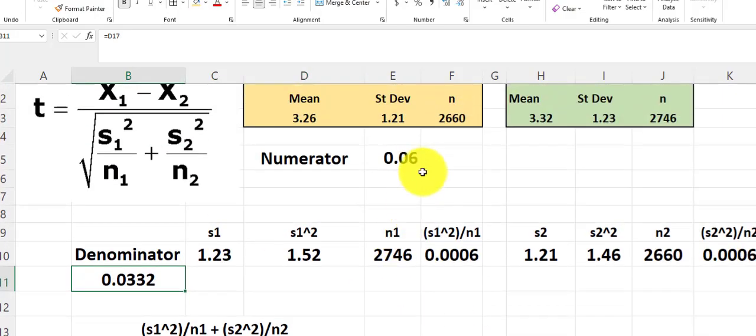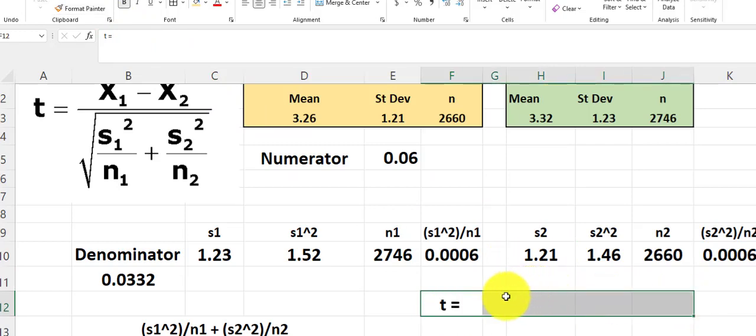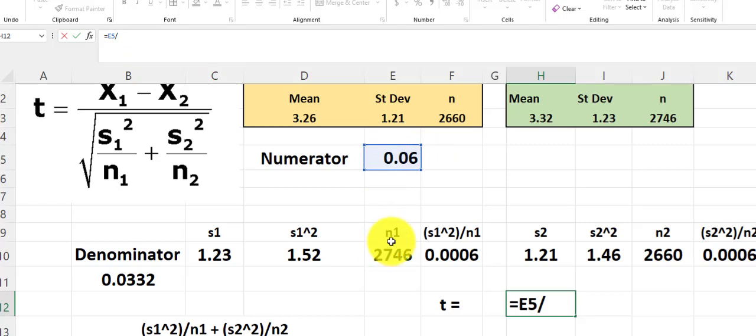We have the numerator, we have the denominator. So our final t-test score, T equals. The numerator is the numerator divided by the denominator. And that equals 1.81.